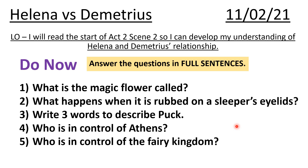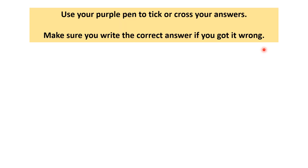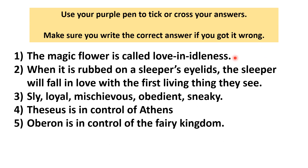Okay, if you're back that means you're ready to make purple pen corrections. All of these answers are in four sentences, so if your answers don't look like this you need to add some phrases in purple pen to make sure they're in four sentences. The magic flower is called love in idleness. When it is rubbed on a sleeper's eyelids the sleeper will fall in love with the first living thing they see. You could use any of these adjectives — you might have three written down but there are five on the screen, so jot those down as well. The more you have the better your notes will be to look back to. Theseus is in control of Athens but Oberon is in control of the fairy kingdom. Pause the video and make any corrections that you need to now please.